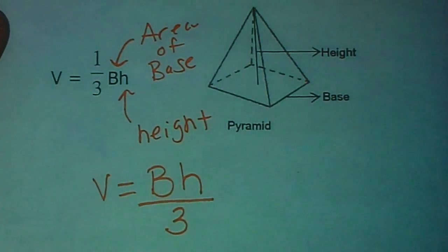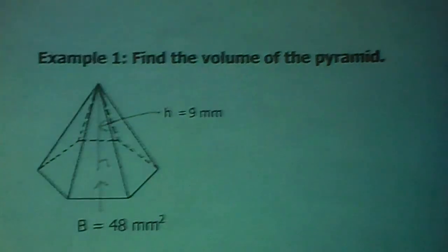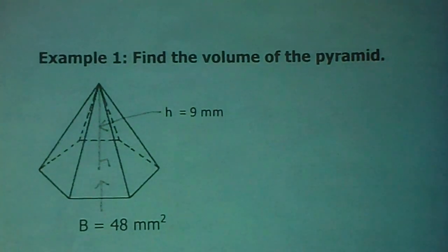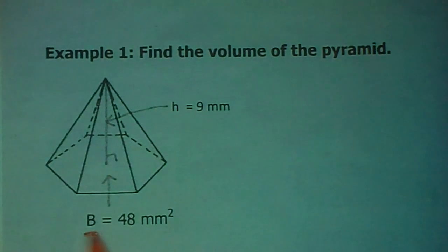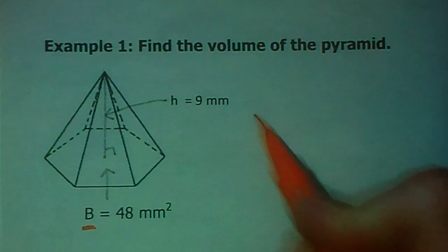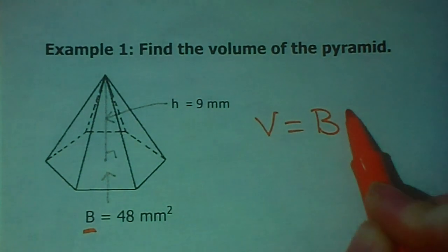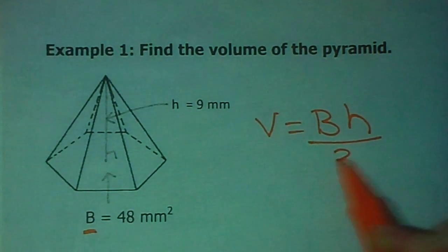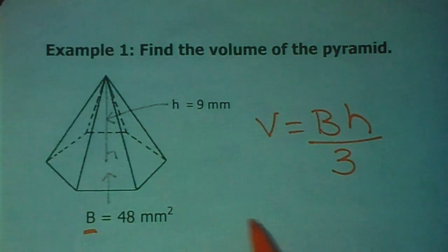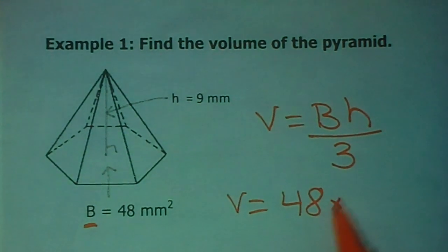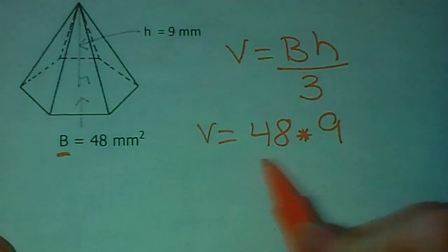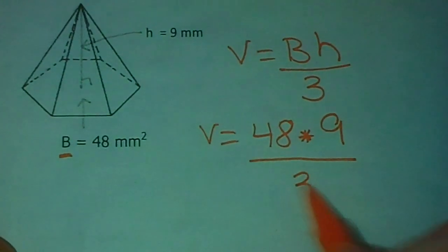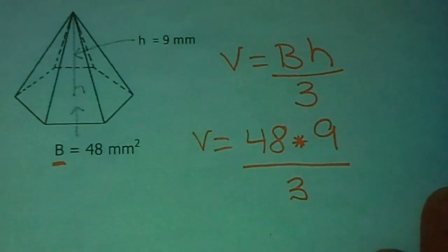So, let's go ahead and take care of our first example. If you look, you are given a hexagonal pyramid. How do you find the area of a hexagon, you ask? Lucky for you, you don't have to. We're giving you big B is 48. So, if our volume is big B times H, divide by 3, we've already got that big B is 48. Our height is 9. And we're going to divide all that by 3 once we multiply it.